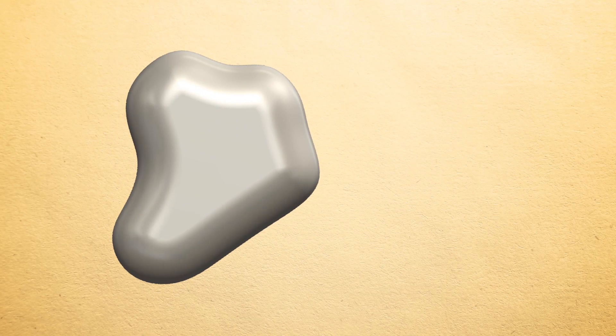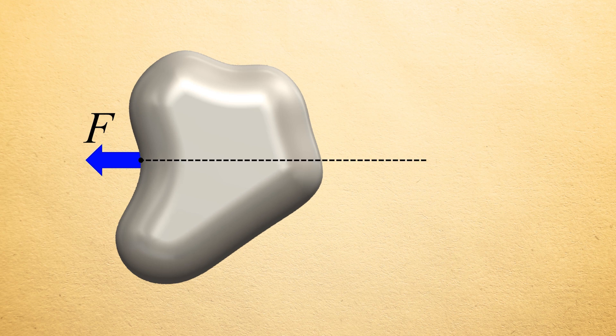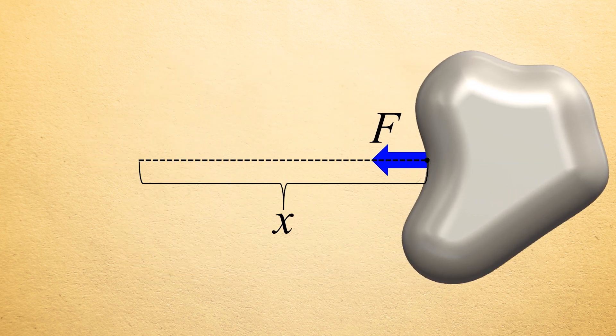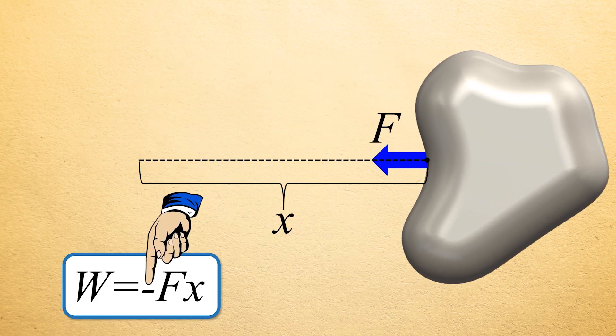Sometimes, the force applied to a body isn't pointed in the same direction as the direction in which the body is moving. When the force applied to a body is pointing in the opposite direction of the direction in which the body is moving, the work performed on the body is a negative value.